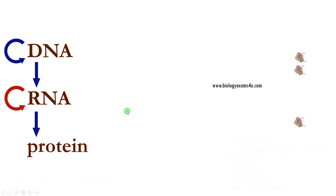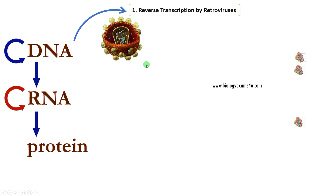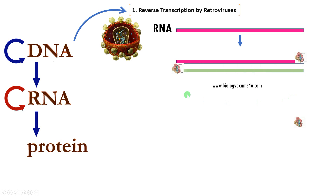The first exception is reverse transcription by retroviruses. These viruses have an RNA genome — like HIV, which possesses an RNA genome. This RNA must be converted to DNA in order to integrate into the host genome, such as in humans. There is an enzyme called reverse transcriptase. This RNA serves as a template for the synthesis of complementary DNA, and the enzyme involved is reverse transcriptase.